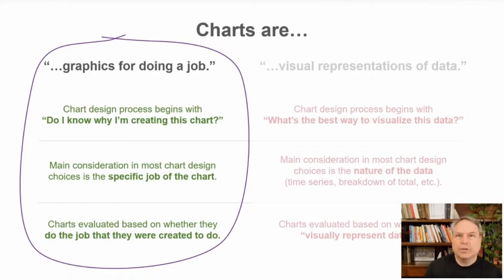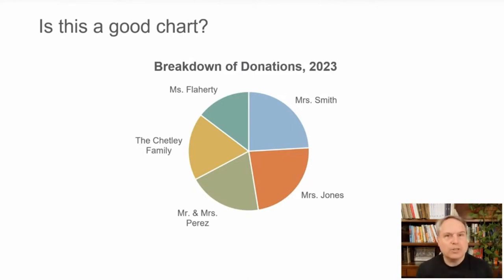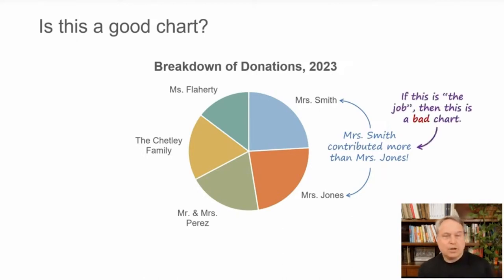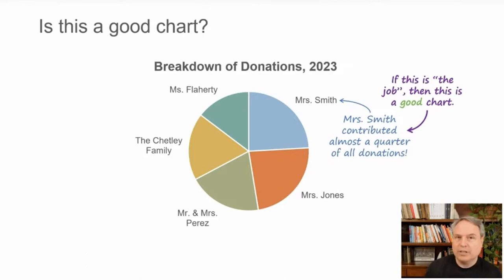For example, if I were to ask you: is this a good chart? — and I know there are a lot of you leaping out of your chairs, and I'm not going to get into the whole pie chart debate. But in general, we can't answer that question without knowing what the chart is for. If we assume the purpose is to communicate that Mrs. Smith contributed more than Mrs. Jones, I would say this is a bad chart, because it's hard to compare those slices — there's not enough precision to see whether Smith or Jones had higher donations. However, if the job is to show that Mrs. Smith contributed almost a quarter of all donations, then this is probably a very good chart, because it's very obvious that slice is a little less than a quarter.